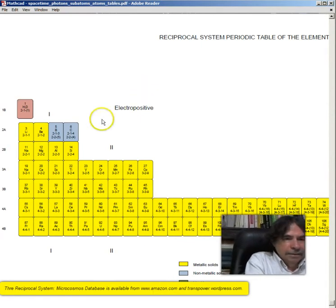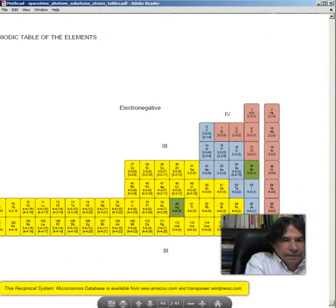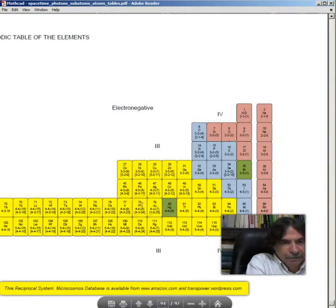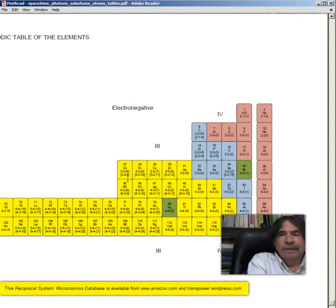And you can see how the electric displacement increments across the table here. Now this side is the electropositive side. When we slide over, we come to the electronegative side.